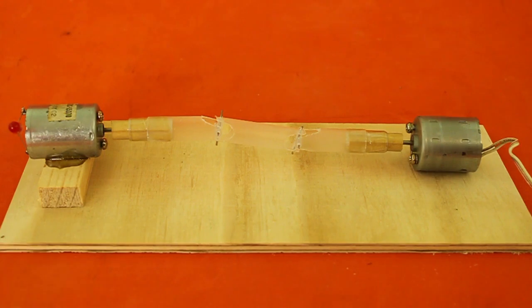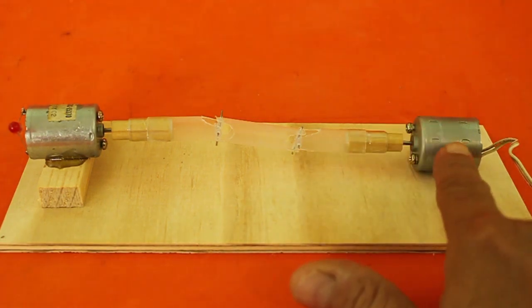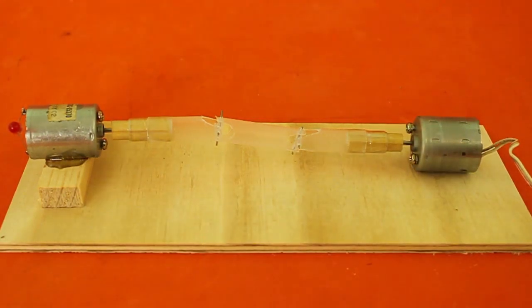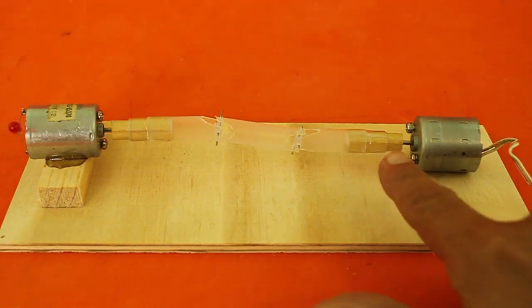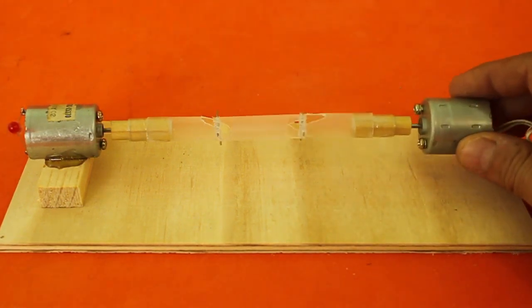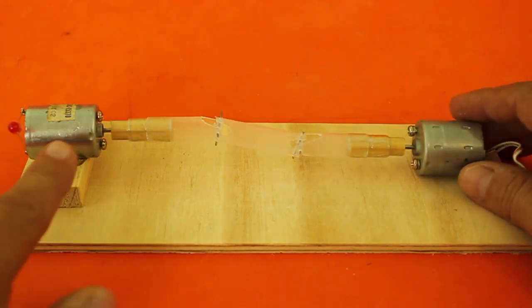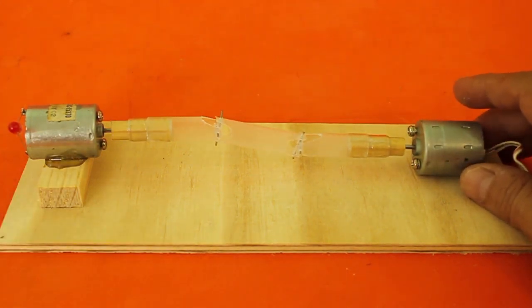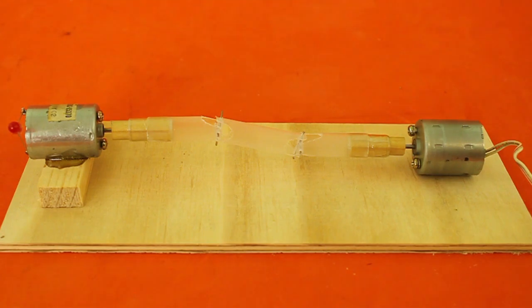Finally, the double cardan transmission is coupled to a pair of electric motors using a wood dowel at each side. This motor will transmit the power and the other one will receive the power acting as a generator. Let's now see how it works.